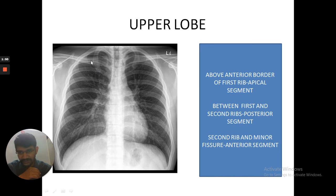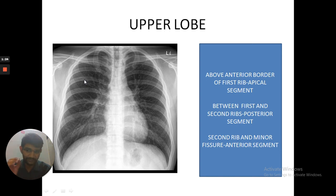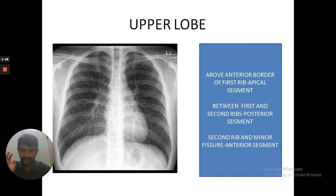If there is a lesion between the first and the second rib, then it is in the posterior segment of the upper lobe. If the lesion is between the second rib and the minor fissure, it is in the anterior segment of the upper lobe. The minor fissure runs at the third costal cartilage — it is a horizontal fissure. So: above first rib = apical; between first and second = posterior; between second rib and minor fissure = anterior segment.